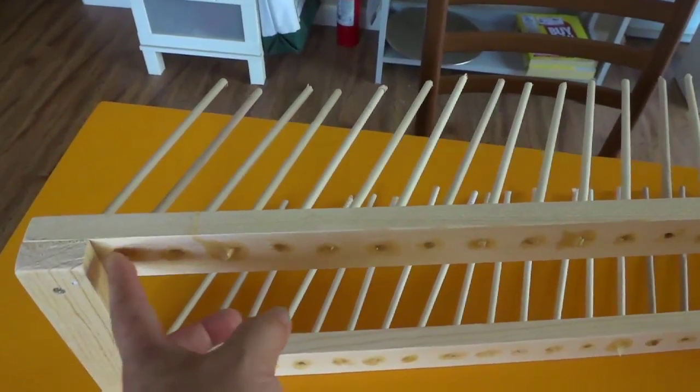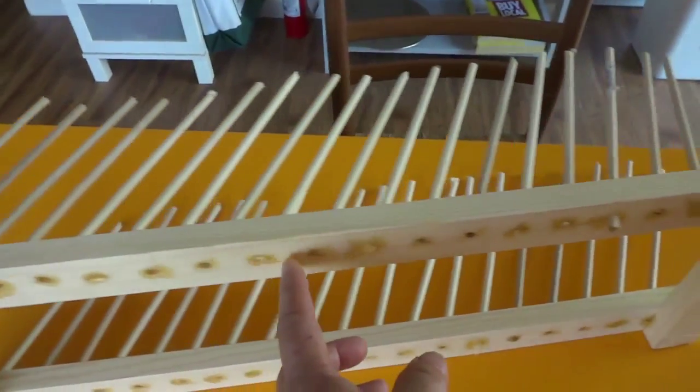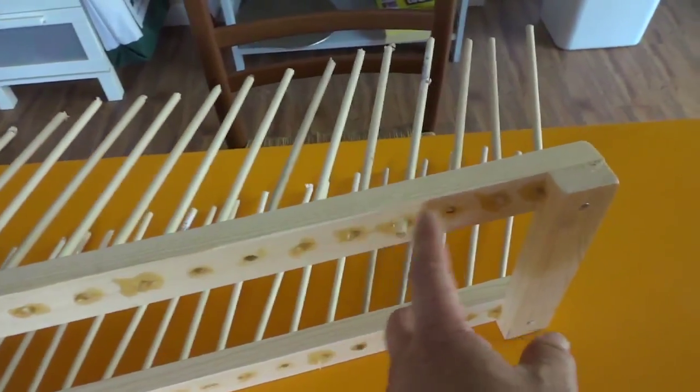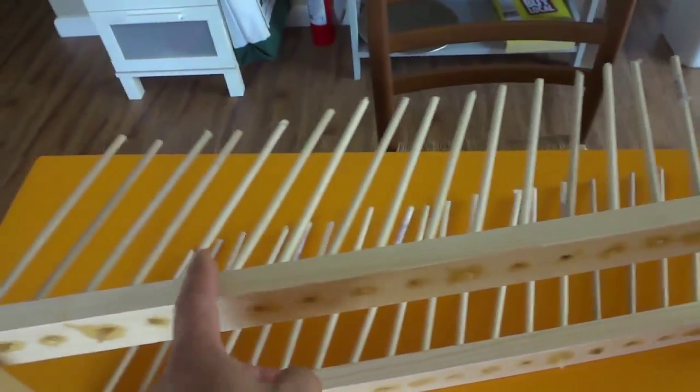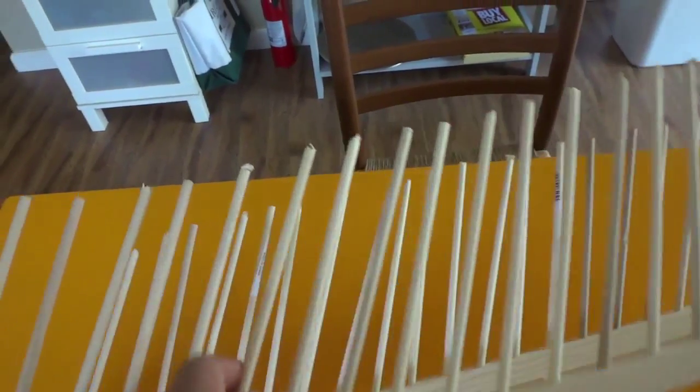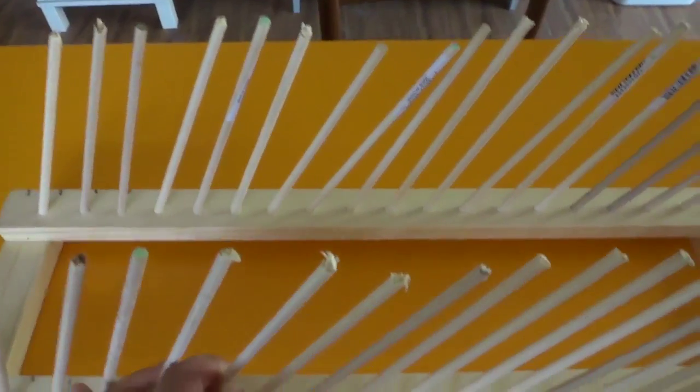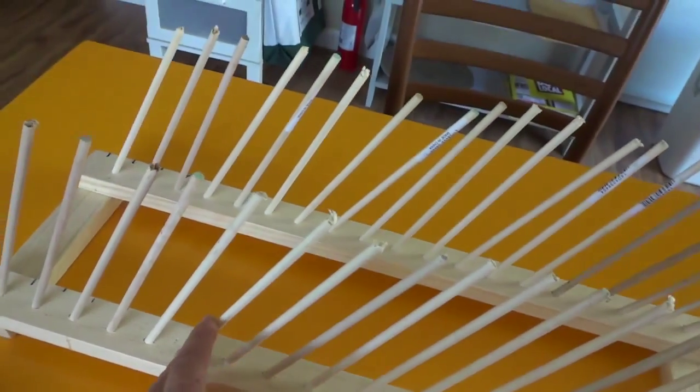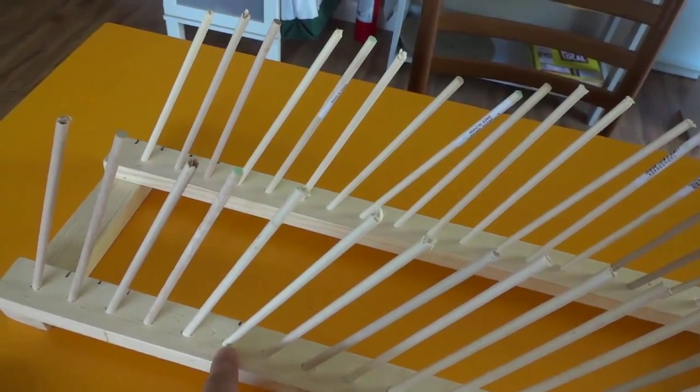Drill quarter inch diameter holes for the wooden dowels. Each one is 8 inches including what's inserted.